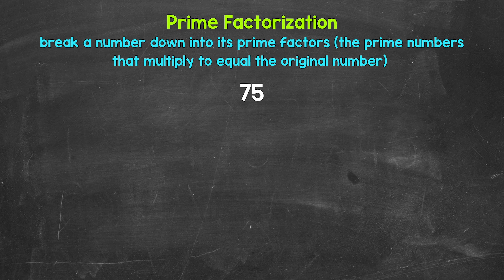Well, three and 25 are factors of 75. Three times 25 equals 75. So let's break 75 down into three and 25.